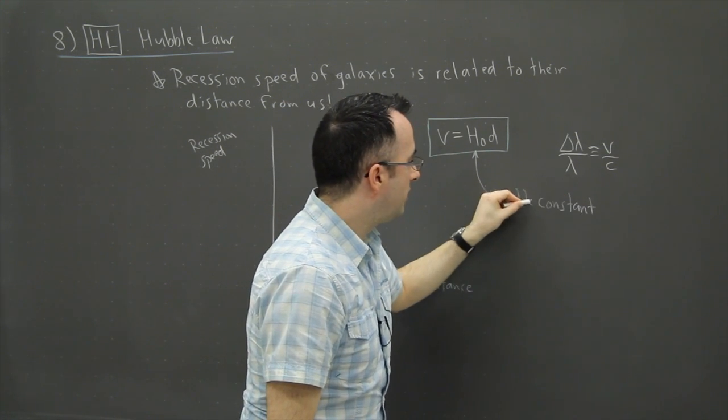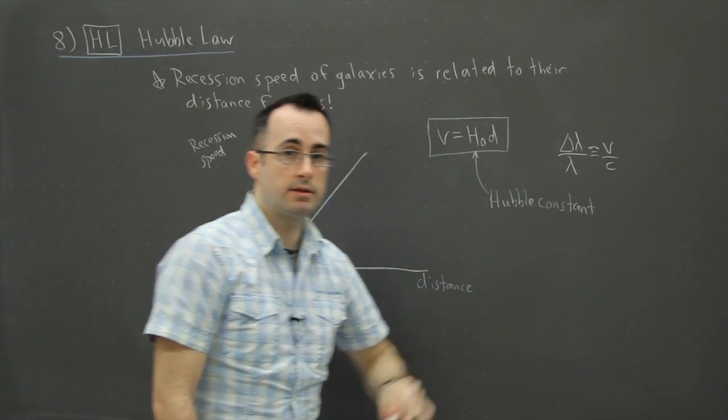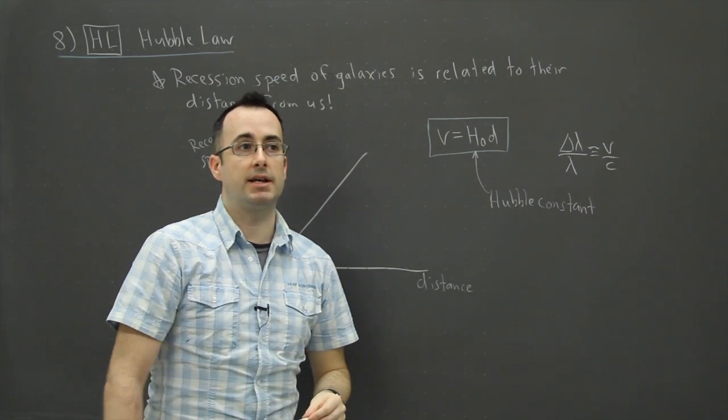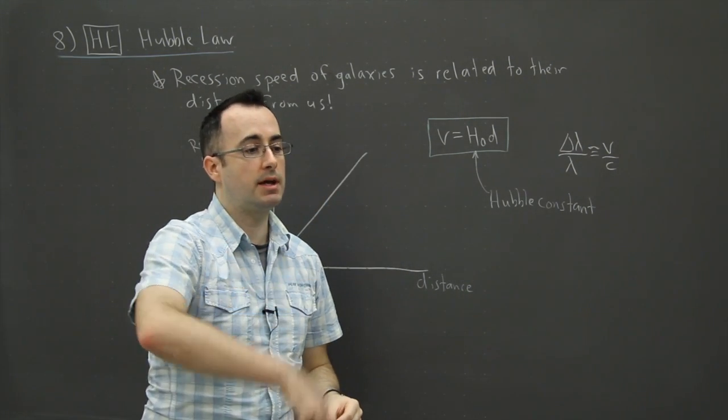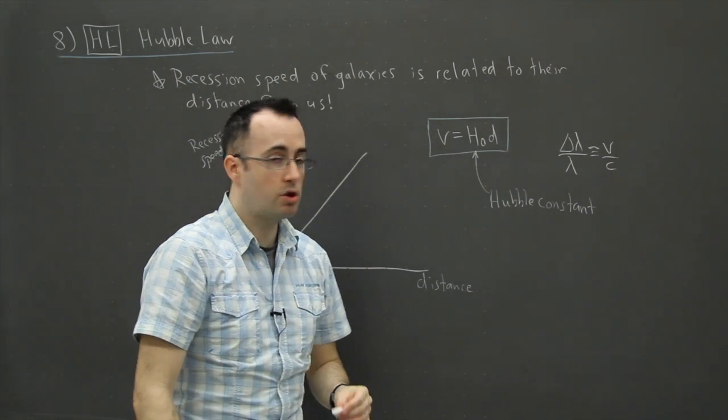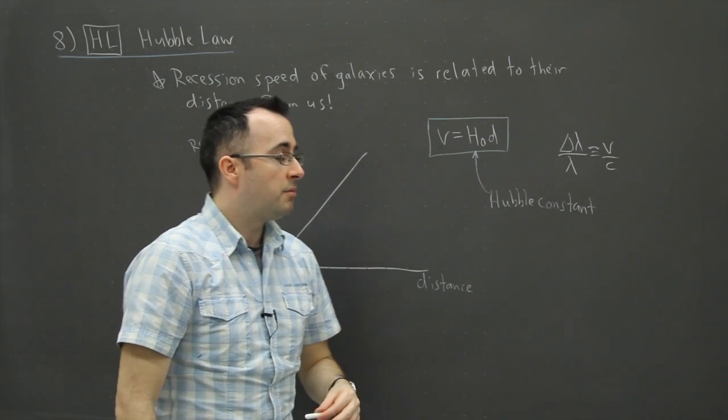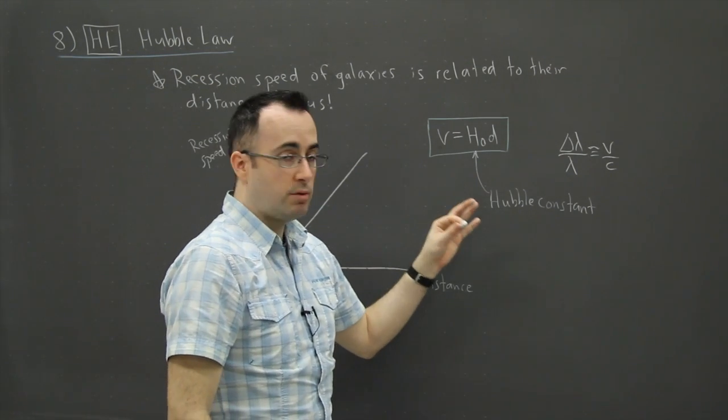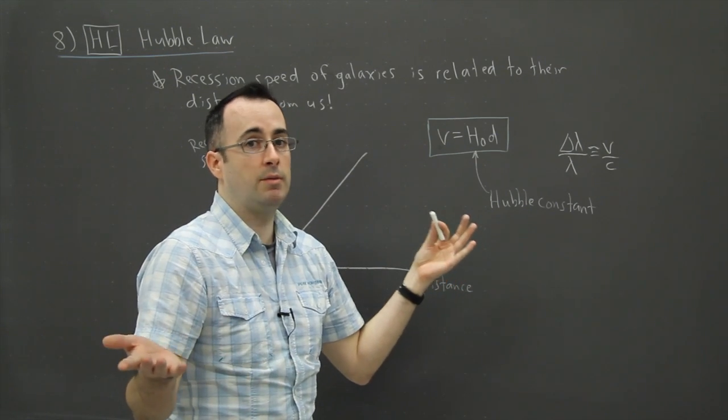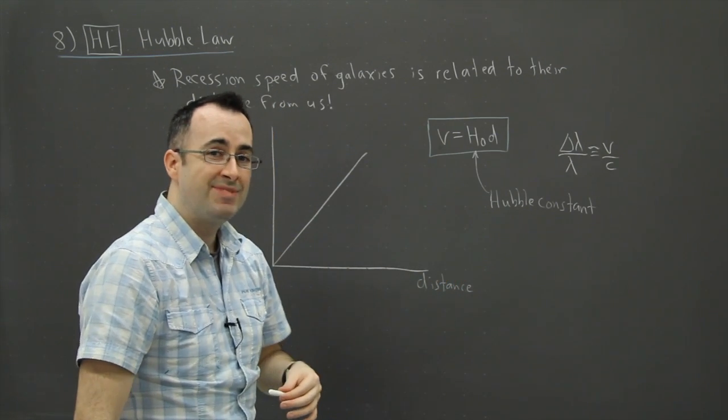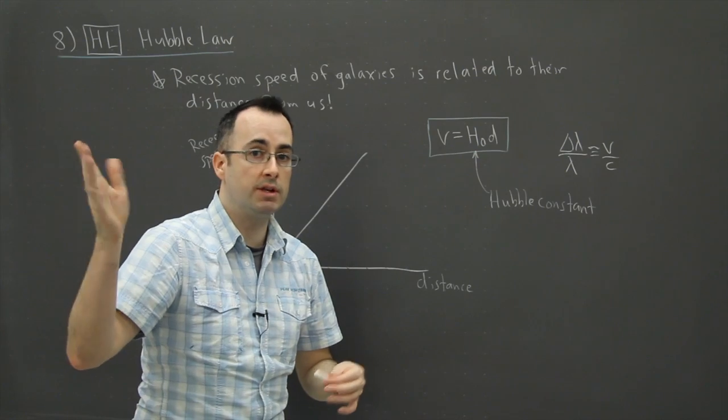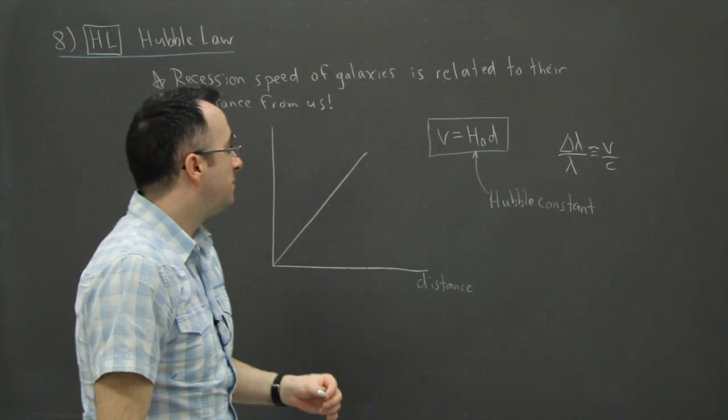Now, this stuff often has weird units. They're going to mention megaparsecs and all sorts of weird units here. But really Hubble's constant, although it has weird units, otherwise it's pretty okay. It's pretty straightforward to use. It's just a matter of sometimes converting units if you need to use it.